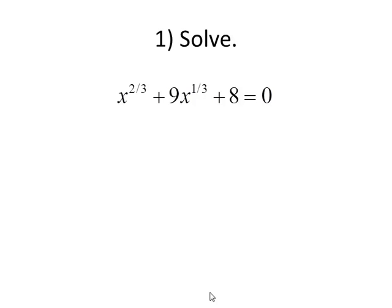Let's take a look at this in action. Here we have our x to the two-thirds power and x to the one-third power. We'll let u equal x to the one-third power. If I square u, x to the one-third to the second power, multiplying gives me x to the two-thirds power.